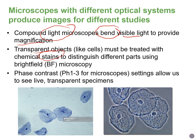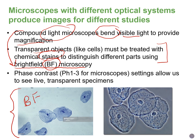Staining usually kills the cells, but then we can examine them using the default setting for most compound light microscopes, known as the brightfield setting or brightfield microscopy. This is an example of what we would see under brightfield microscopy — epithelial cells, which are the outermost layer of our human tissues. This looks like what I would see if I were to take a toothpick, scrape the inside of my cheek, rub it on a glass slide, and add some blue stain — the cells would appear dead, attached to the slide, with a blue color from the stain.